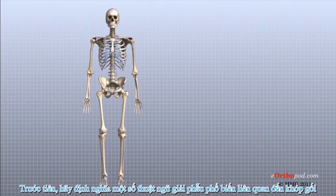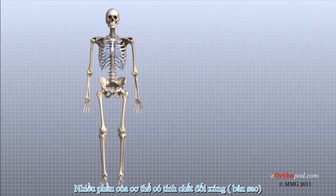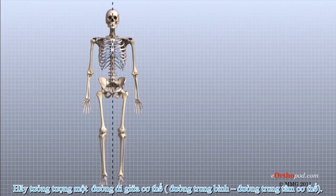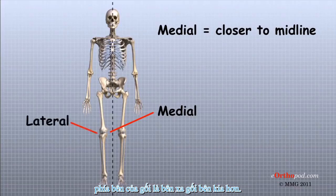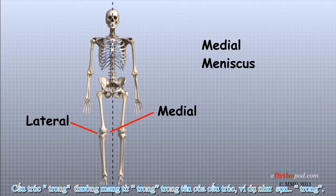First, let's define some common anatomic terms as they relate to the knee. This will make it clearer as we talk about the structures later. Many parts of the body have duplicates, so it is common to describe parts of the body using terms that define where the part is in relation to an imaginary line drawn through the middle of the body. For example, medial means closer to the midline, so the medial side of the knee is the side closest to the other knee. Structures on the medial side usually have medial as part of their name, such as the medial meniscus.